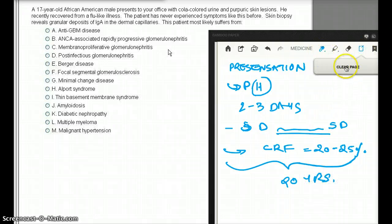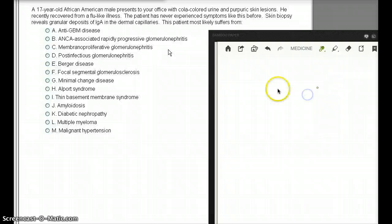So now let's talk about what we see on light microscopy. So on light microscopy, we're going to see normal, or we're going to see focal proliferative glomerulonephritis. So we're going to see focal proliferative glomerulonephritis.